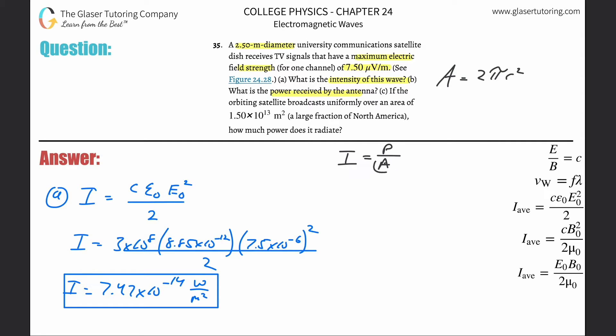So what we need to do here—remember it's asking for the power—we need intensity and area. Intensity we just found, and now we're looking for the area. That's simply going to be equal to 2π multiplied by the radius, which is half, so 1.25 squared. Let's calculate it. So 2π times 1.25 squared.